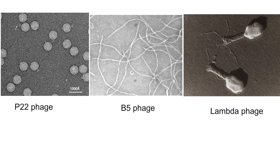Given the abundance of phages, it shouldn't be surprising that they exhibit incredible diversity in size, structure, and niche. The most well-known and well-studied phages are those which infect E. coli, like the T4 phage, which have the iconic lunar lander shape.